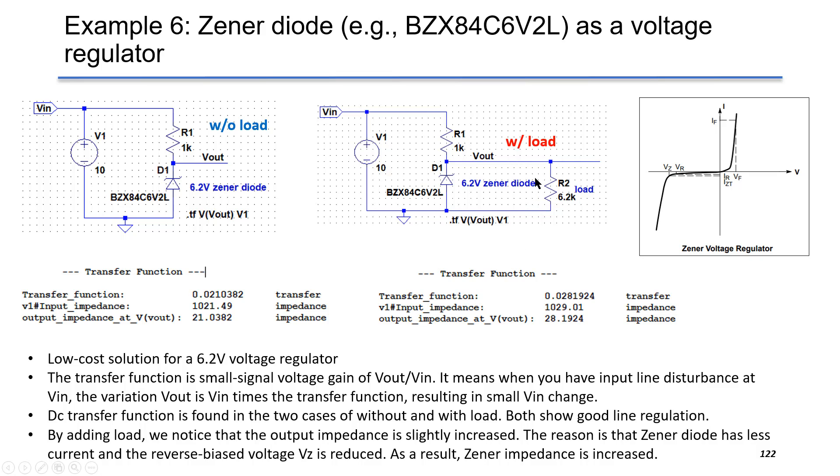Also, by adding a load, we noted that the output impedance is slightly increased. The reason is that the Zener diode has less current because some current is flowing through R2, and the reverse voltage over Zener diode is reduced towards the origin. As a result, the Zener impedance is increased.